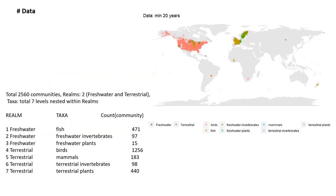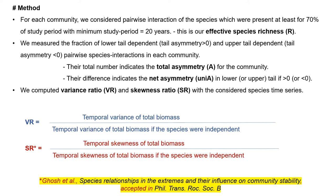For our study, we have collected individual species-level data from 2,560 communities. The data is hierarchical with seven taxa nested within two realms. For each community, we consider pairwise interactions of species which were present for at least 70% of the study period, with a minimum study period of 20 years. This is our effective species richness R. We also measure the fraction of lower tail dependent and upper tail dependent pairwise species interactions in each community. The total number indicates the total asymmetry for that community and their difference indicates the net asymmetry.